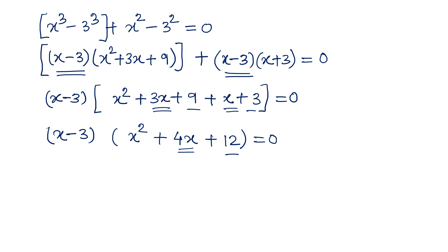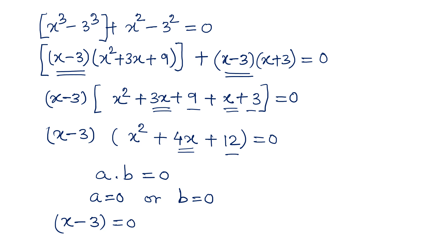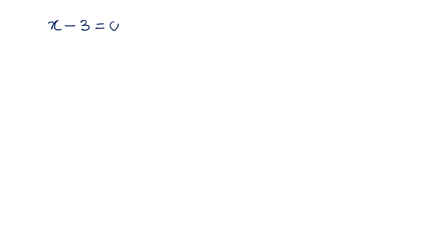This equation can be split into two brackets. Since a · b = 0 means either a = 0 or b = 0, we set x - 3 = 0 or x² + 4x + 12 = 0. From x - 3 = 0, adding 3 to both sides gives x = 3. This is one real solution.